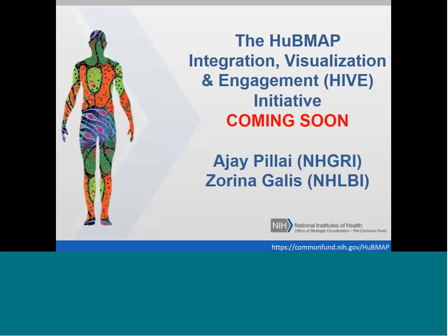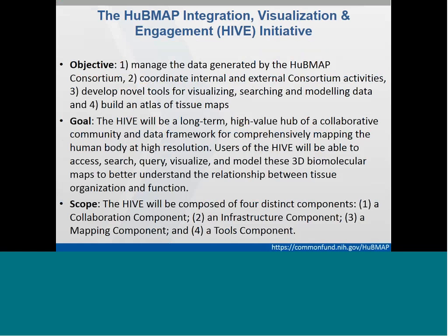There will be a data center that shows and integrates all the data generated by this program — that RFA is not yet out. The objectives are to manage the data generated by HubMap, coordinate internal and external consortium activities, develop new tools for visualizing, searching, and modeling the data, and build the Atlas for Tissue Maps. The overall goal for the HIVE — the HubMap Integration Visualization Engagement Center — will be a long-term, high-value hub for a collaborative community and data framework for comprehensively mapping the human body at high resolution. Users of the HIVE will be able to access, search, query, visualize, and model these 3D biomolecular maps.